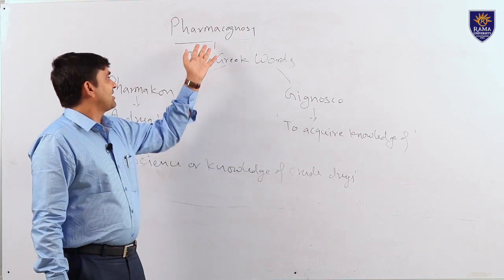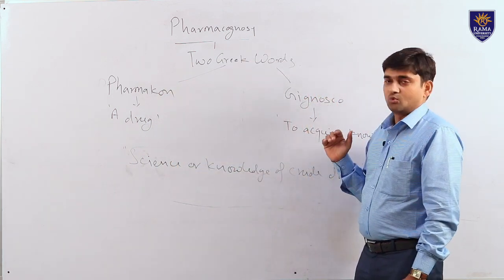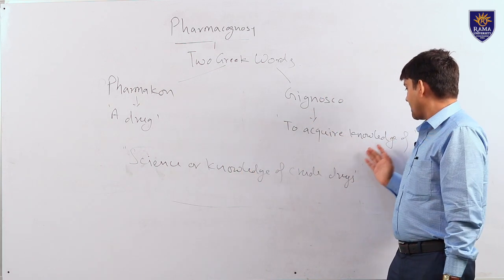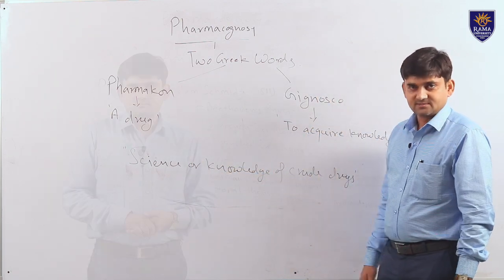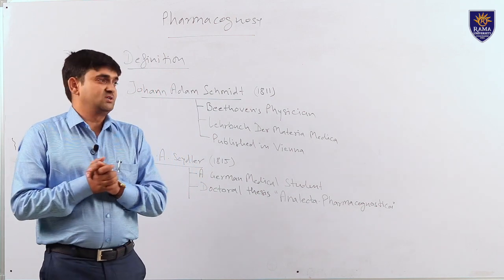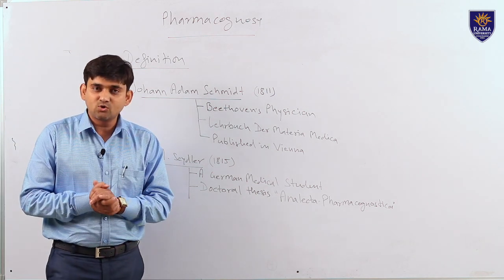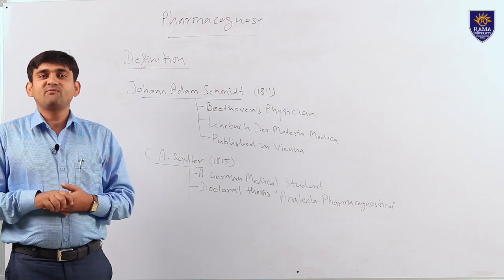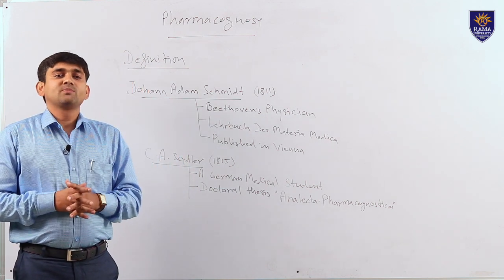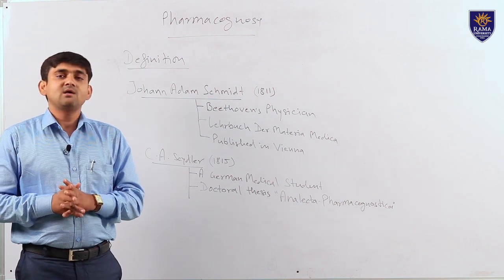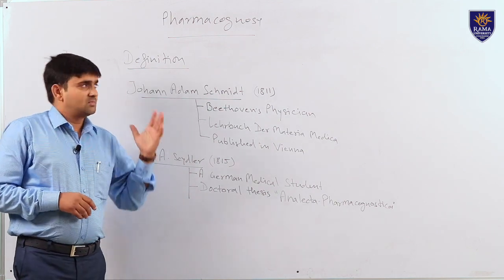Pharmacognosy is derived from two Greek words: pharmacon and gignosco. Pharmacon means a drug and gignosco means to acquire knowledge of. So pharmacognosy is the science or knowledge of crude drugs. The proper definition: pharmacognosy may be defined as a branch of bioscience which treats in detail of medicinal and related products of crude and primary type obtained from plants, animals, minerals, and marine sources.